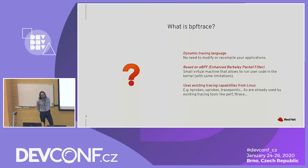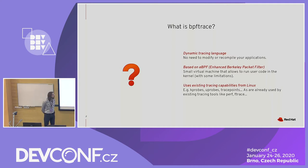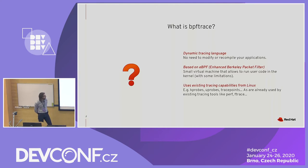Notably, you cannot do loops in there because you want to only run programs that terminate. Besides that, BPF trace also reuses existing tracing capabilities that exist in the Linux kernel that are already used by other tools — for instance, kprobes, uprobes, tracepoints. If you've already used a tool like perf or ftrace before, you're probably already familiar with that.